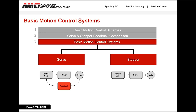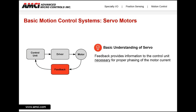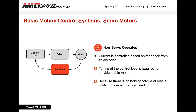Focusing on these two specific motion types, let's look at how each fits into their respective control scheme, starting with a servo. In a servo system, feedback provides information that is necessary for the proper phasing and control of the motor current. Based on commands from the control unit, the driver supplies the motor current, which is continually adjusted based on motor feedback. For proper motion, the system must be tuned. Because there is no holding torque at rest, a holding brake is often required, specifically for vertical applications.